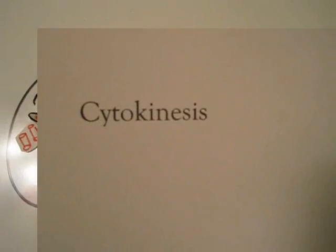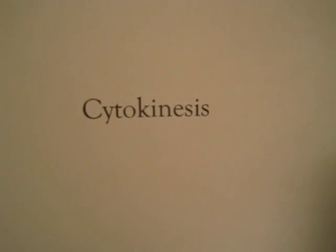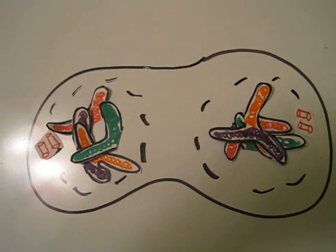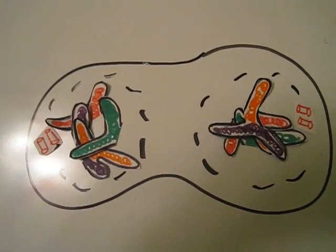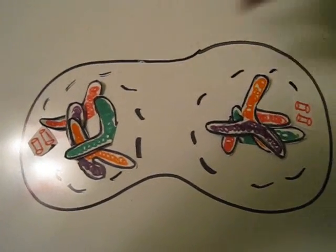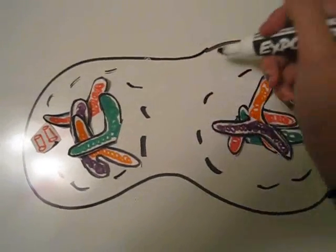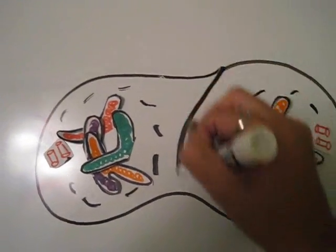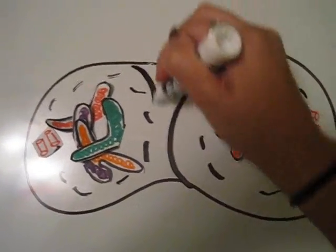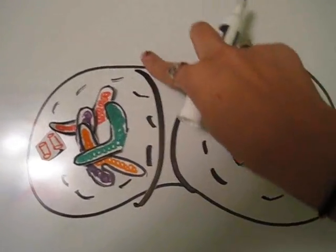The last phase is cytokinesis. In cytokinesis, the growing cell is pinched in half, forming two new daughter cells.